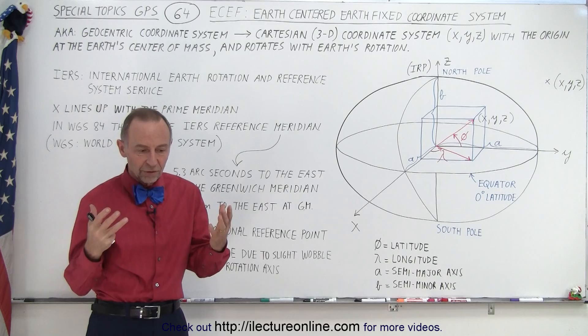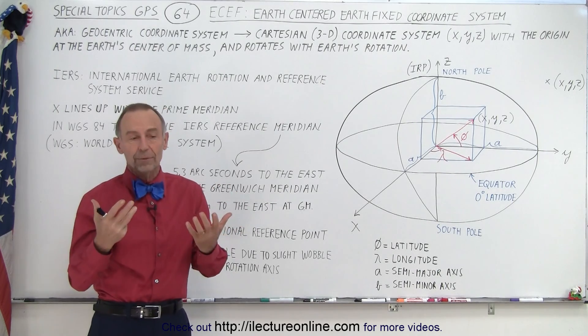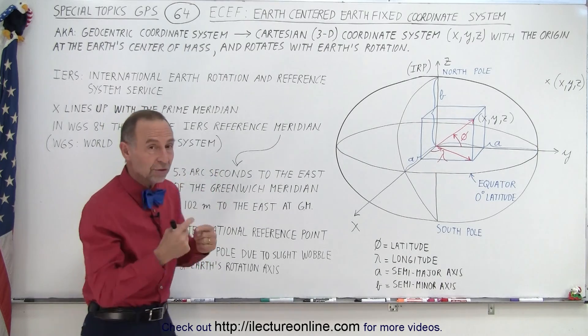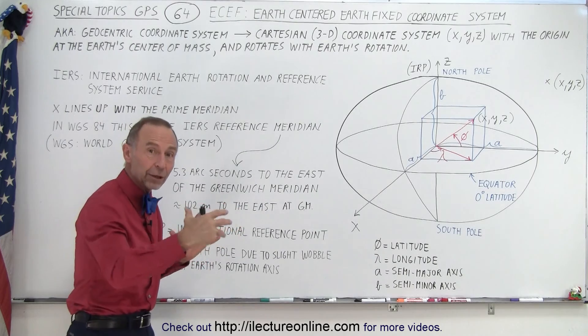So a space-centered coordinate system is called the fixed coordinate system that doesn't rotate, but the earth-centered coordinate system does rotate with the earth so it stays fixed to the rotating earth.